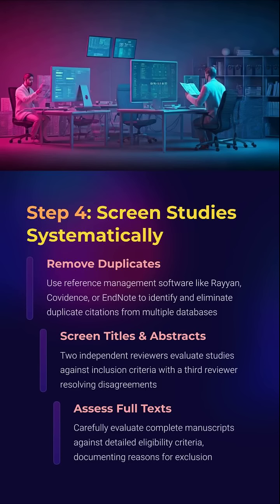Remove duplicates with Rayyan or Covidence. Two reviewers screen abstracts and full texts independently. A third resolves disagreements. This is peer-reviewed integrity at the selection stage.